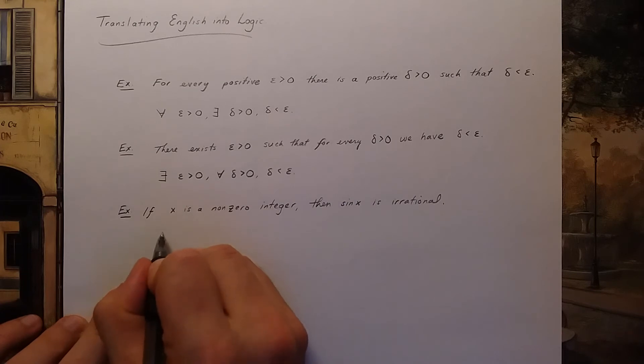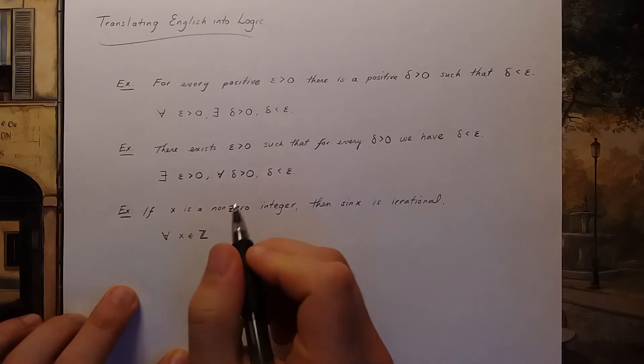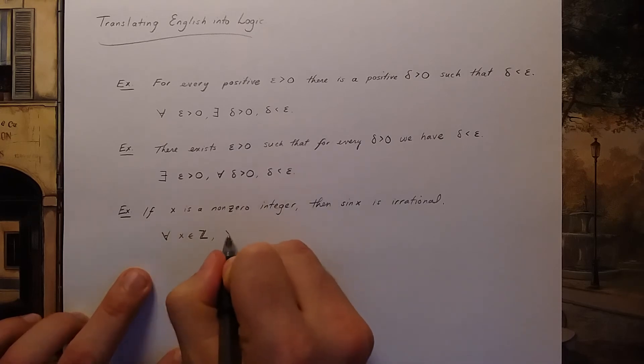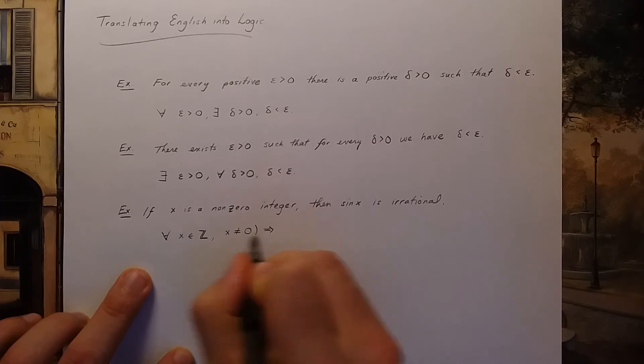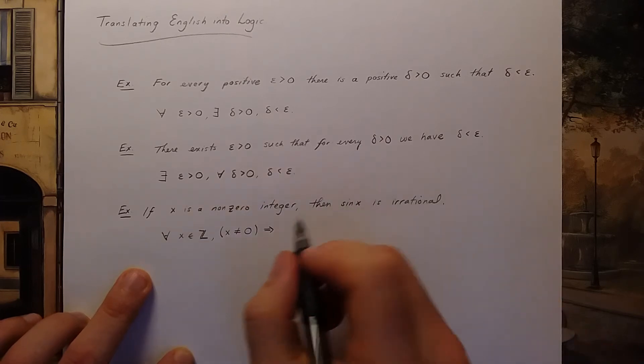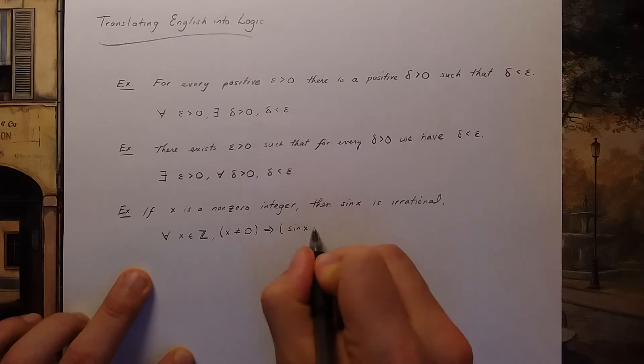Using logic symbols you could do it this way. For every x in Z, x non-zero implies sine x is not in the rationals.